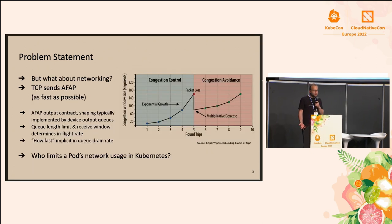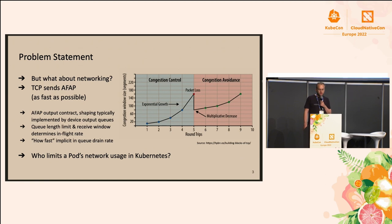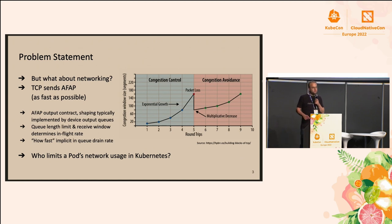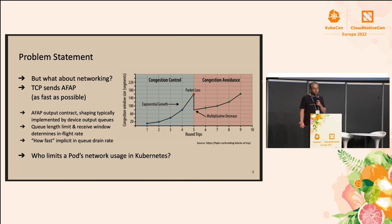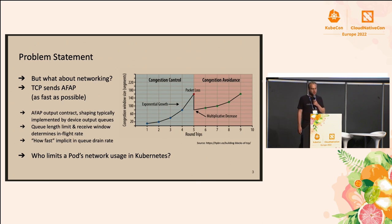So the question is: what about networking? TCP by its nature sends as fast as possible. What you can see here is a typical TCP congestion control algorithm that tries to send more TCP segments to the network — exponential growth at first, until it experiences packet loss, then it backs down and repeats. The output contract for TCP is to send as fast as possible, and shaping is typically done by device output queues. The queue limit for output queues as well as the remote receive window size determine how many packets from TCP can be in flight. But who actually limits a pod's network usage in Kubernetes?